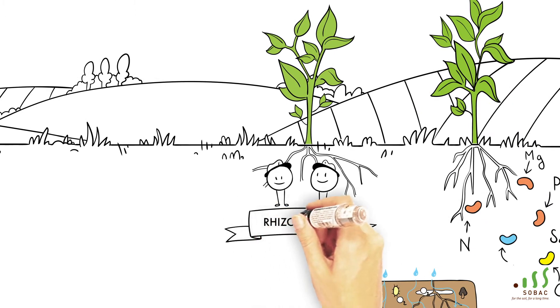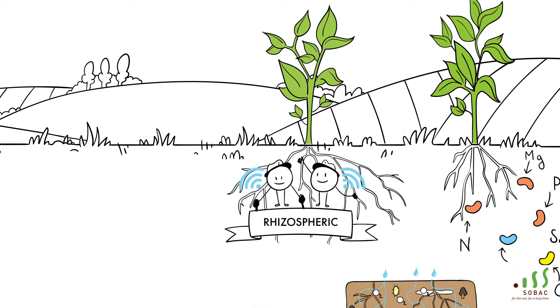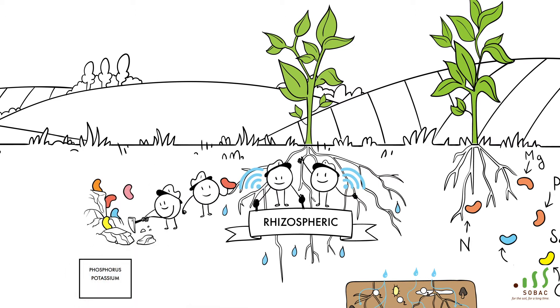The rhizospheric microorganisms communicate with the roots to increase their prospecting area and allow the plant to be fed regularly with water and nutrients. They make mineral elements such as phosphorus, potassium, and other trace elements available for the plant.